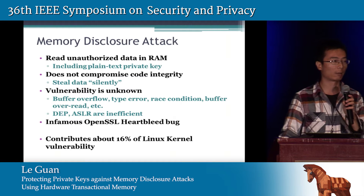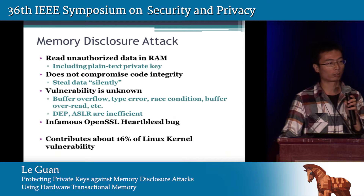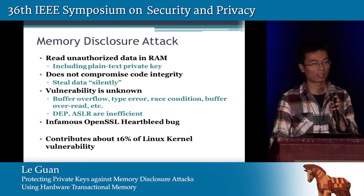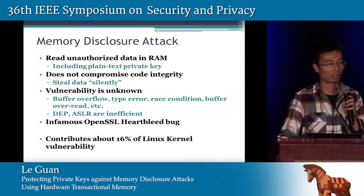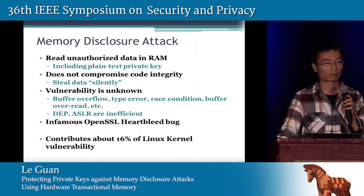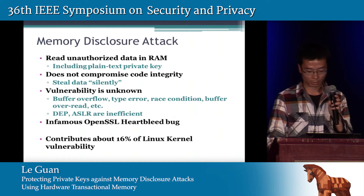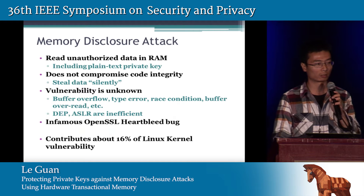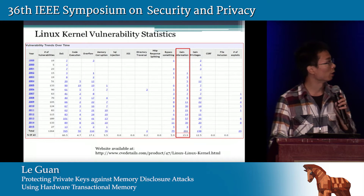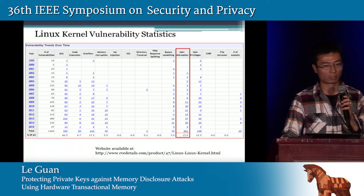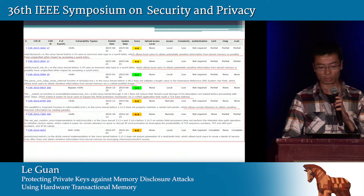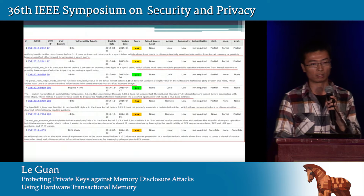The attack stays silent and does not assume any specific vulnerability. It can use overflow-type errors, etc. So existing defending technologies such as DEP are all inefficient. For example, the infamous OpenSSL Heartbleed allows attackers to read sensitive content. According to statistics, this kind of attack contributes about 16% of all Linux kernel vulnerabilities, and almost all of them allow attackers to steal some data from kernel space.